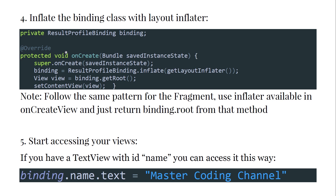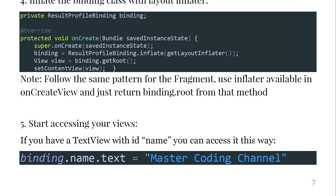To inflate the binding class, declare a private binding variable, then in onCreate call binding = ResultProfileBinding.inflate(layoutInflater) and setContentView(binding.root). For fragments, follow the same pattern using the inflater available in onCreateView and return binding.root. To access views, if you have a TextView with id 'name', you can access it as binding.name.text = "Master Coding Channel".